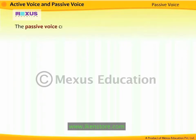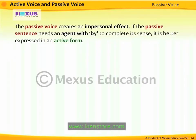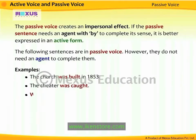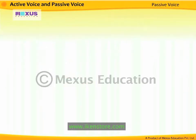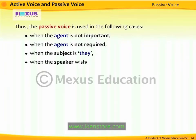The passive voice creates an impersonal effect. If the passive sentence needs an agent with 'by' to complete its sense, it is better expressed in an active form. The following sentences are in passive voice but do not need an agent to complete them. For example: 'The church was built in 1853,' 'The cheater was caught,' and 'Was the news aired?' The agents in these examples are not important. Thus, the passive voice is used when the agent is not important, when the agent is not required, when the subject is 'they,' when the speaker wishes to remain neutral, or when there is a need for confidentiality.